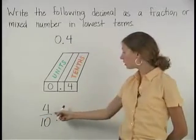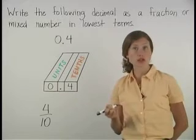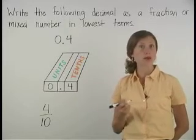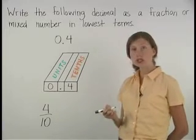Notice, however, that 4 tenths is not in lowest terms. So we need to divide the numerator and the denominator by the greatest common factor of 4 and 10, which is 2.